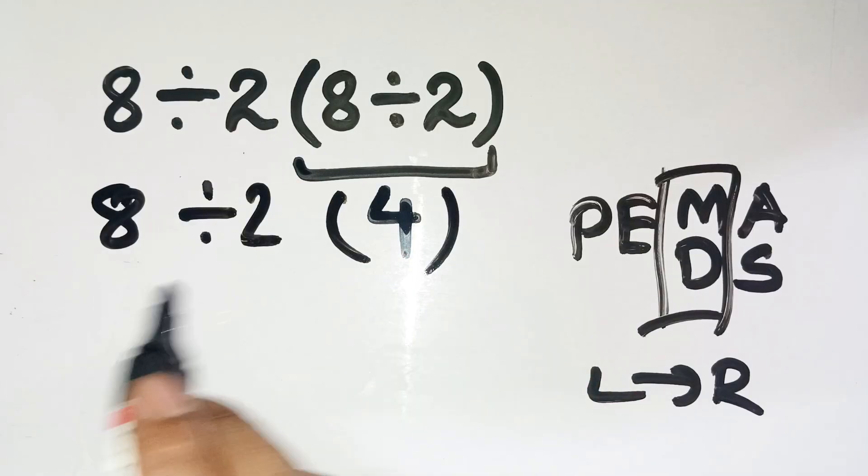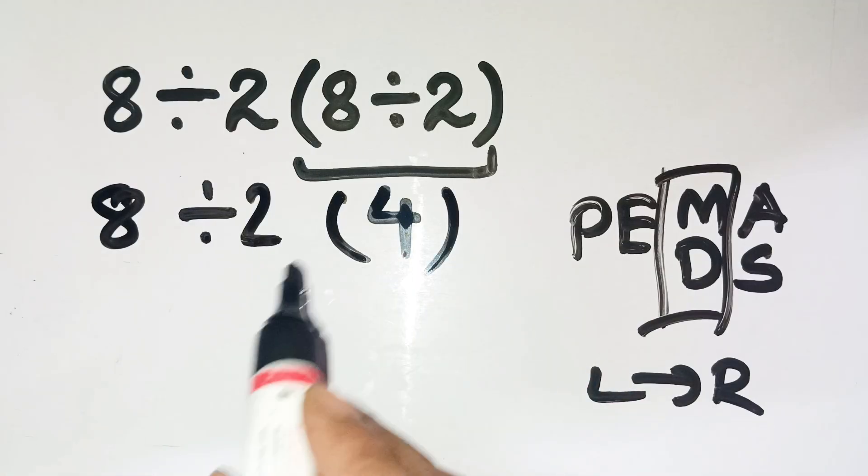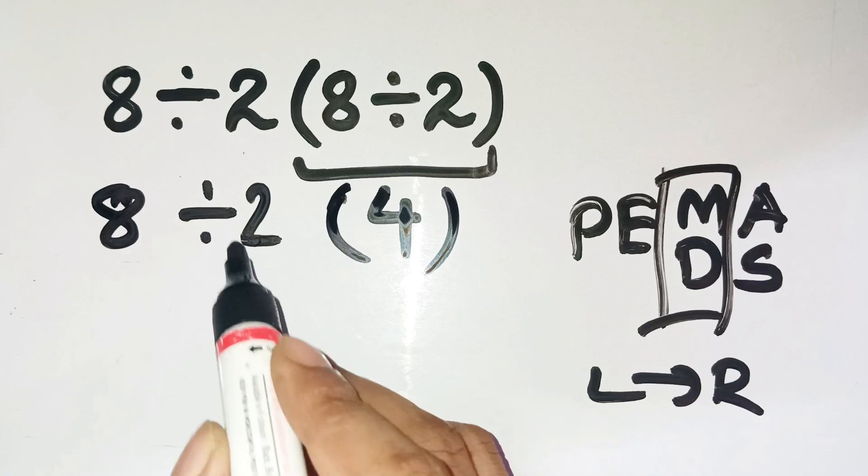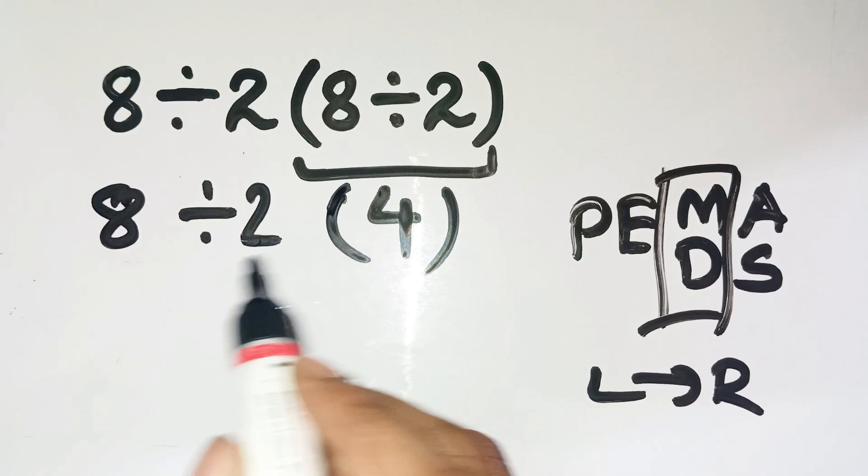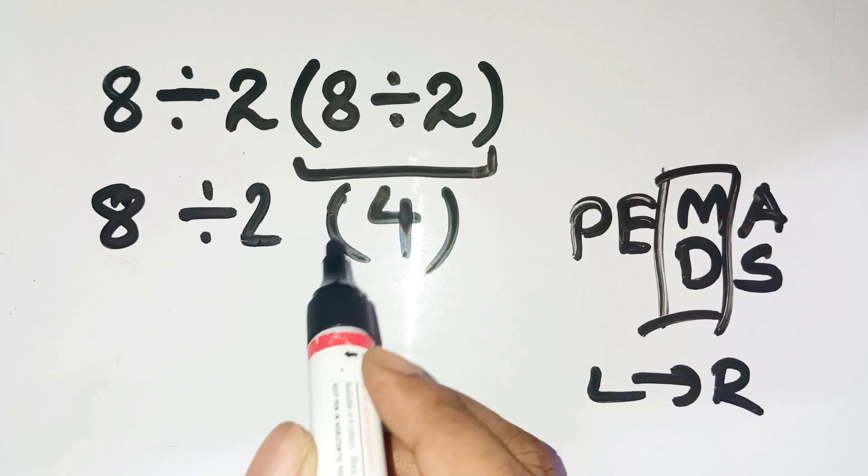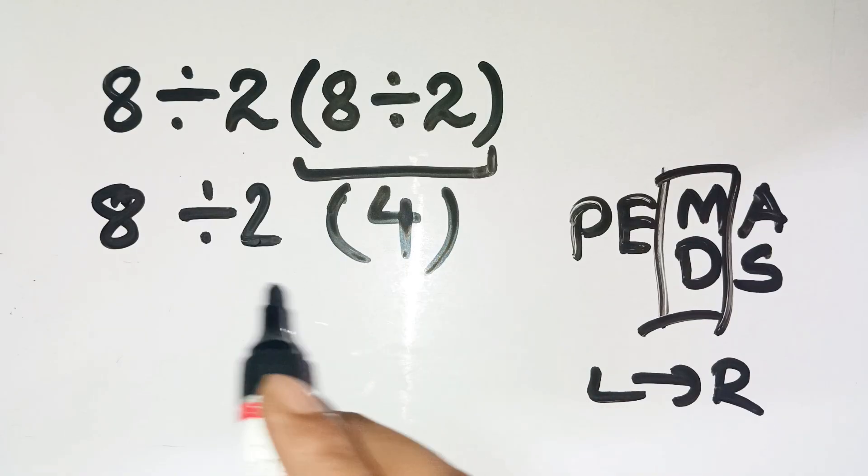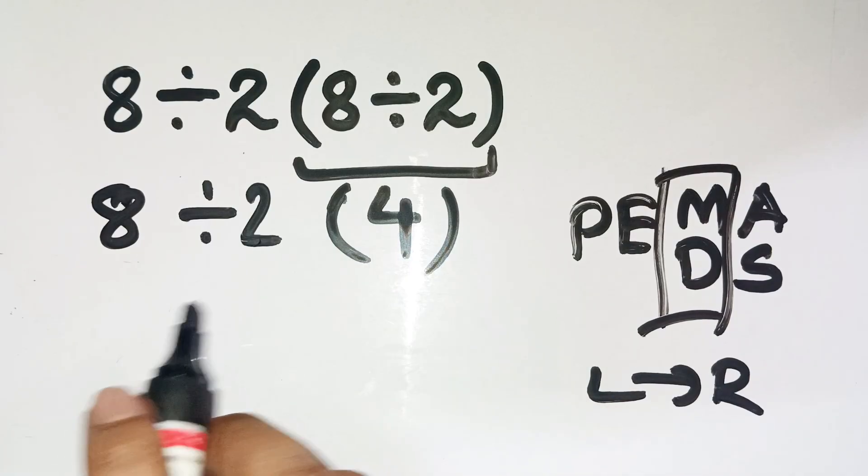Now, that part, 2 parentheses 4, is where the confusion explodes. Some people see that as if it's 2 times 4, while others think the parentheses somehow change the order. But no, the parentheses here are just grouping the 4. It doesn't mean it jumps ahead in priority.